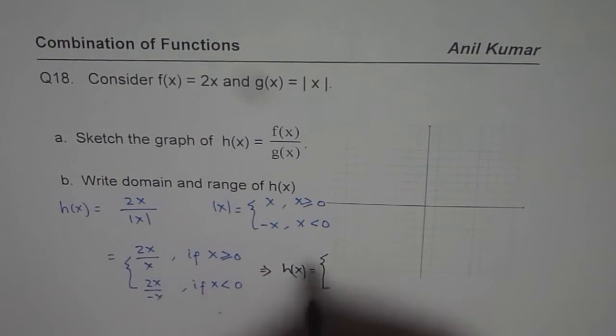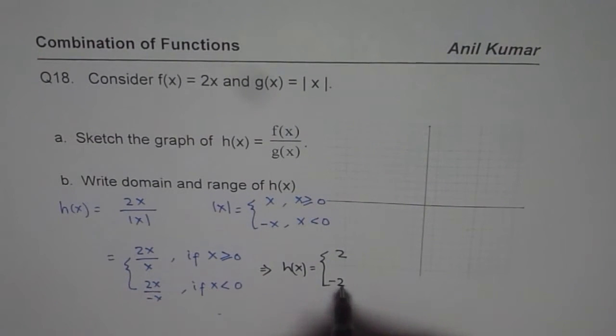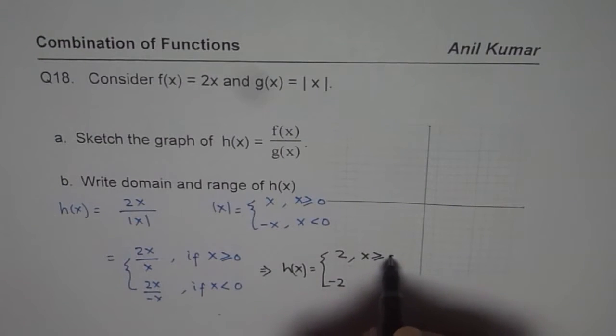So when you divide x by x you get 2 here, and if you divide x by minus x you get minus 2, and that is when x is greater than or equal to 0 and this is when x is less than 0.